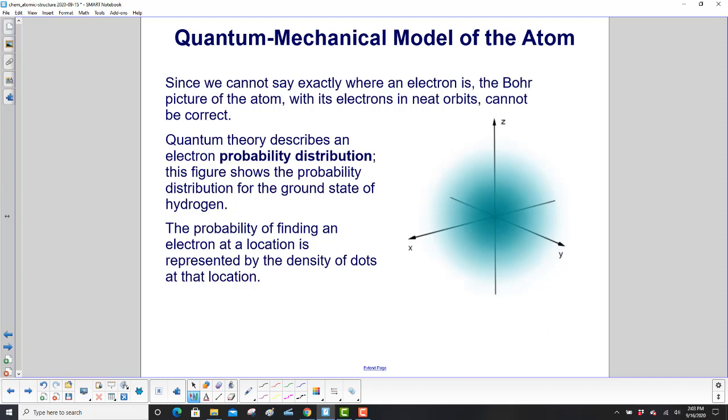Quantum theory describes an electron probability distribution. The figure over here shows the probability distribution for the ground state of hydrogen. The probability of finding an electron at a location is represented by the density of dots at that location.